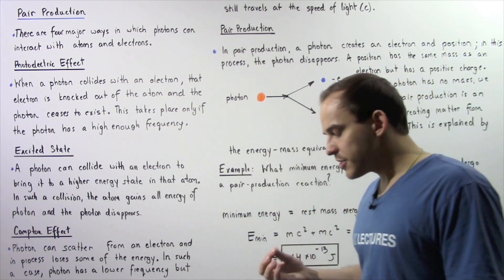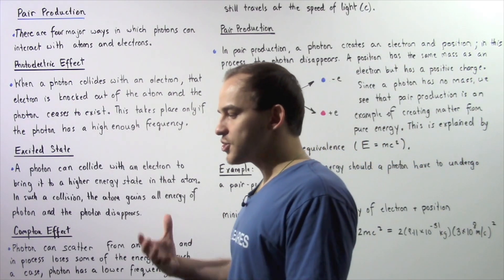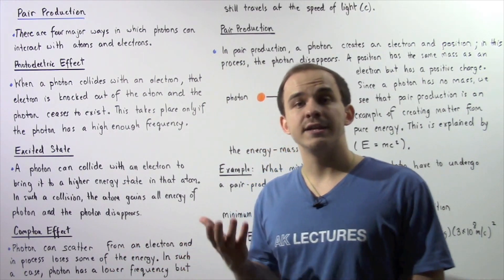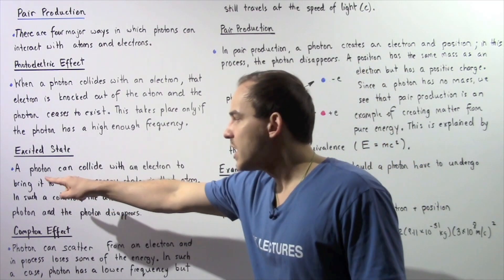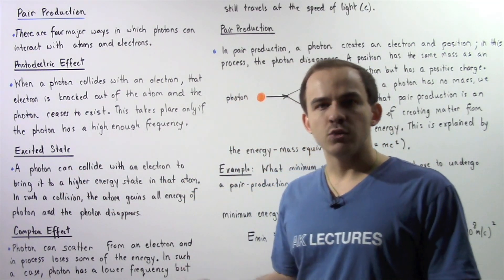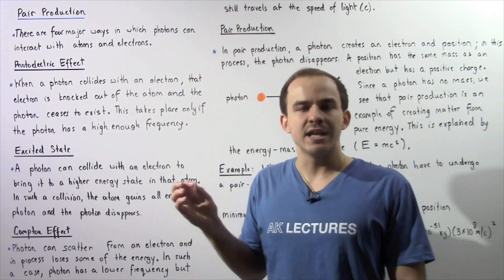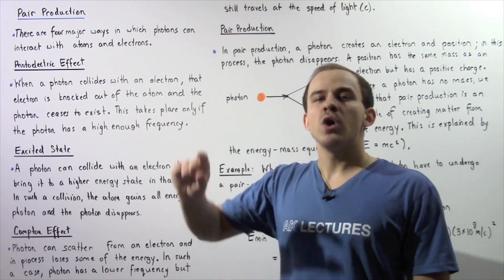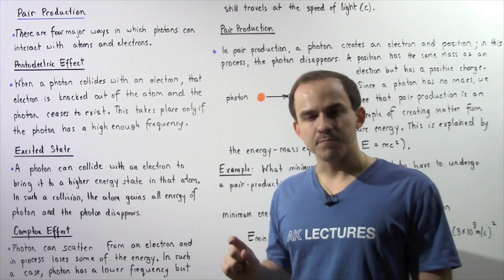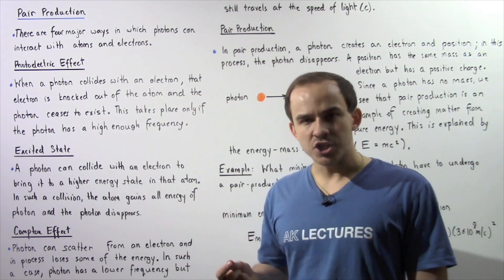Now, the second method by which a photon interacts with electrons found inside atoms is given by the following description. Basically, a photon can collide with an electron found inside that atom, and that sends that electron to a higher energy state within that atom. So in such a collision,